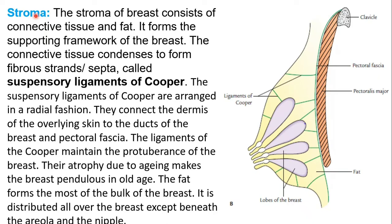The stroma means connective tissue. The skin consists of two layers: the dermis and epidermis. The epidermis is the epithelium present outside. From the dermis, which is made up of connective tissue, green septa pass from the epidermis to the clavipectoral fascia. These extensions are called the ligaments of Cooper, which maintain the breast in an erect position and prevent it from falling downward in a pendulous appearance.